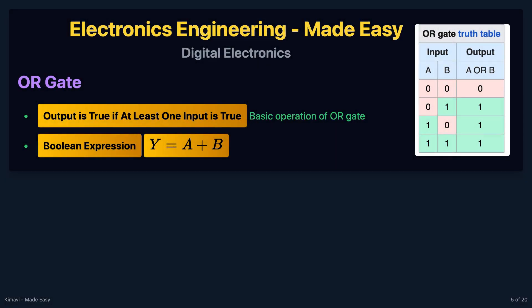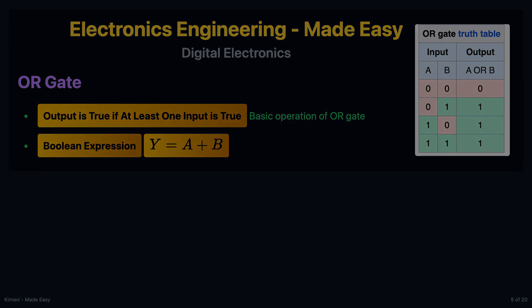The OR gate outputs true if at least one input is true. The boolean expression for an OR gate is y = a + b, where the plus represents the OR operation.